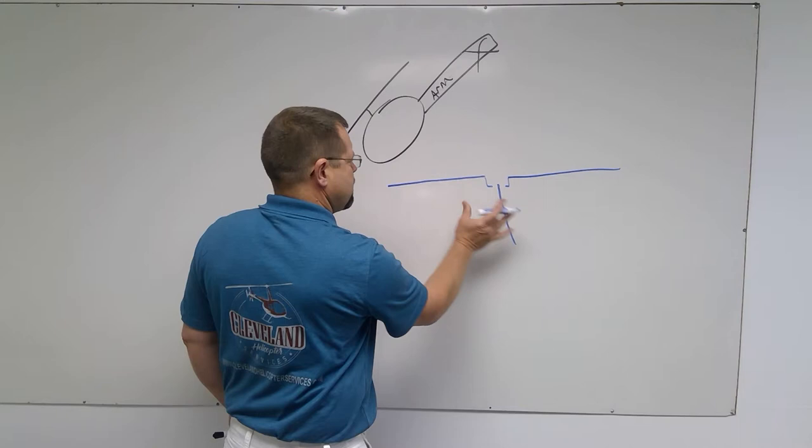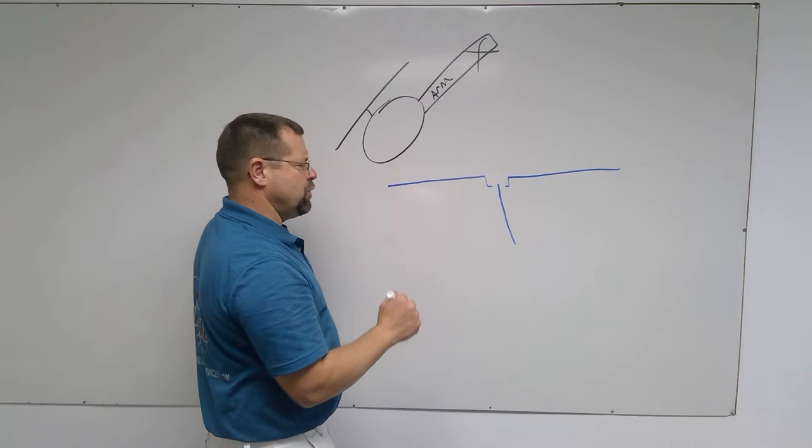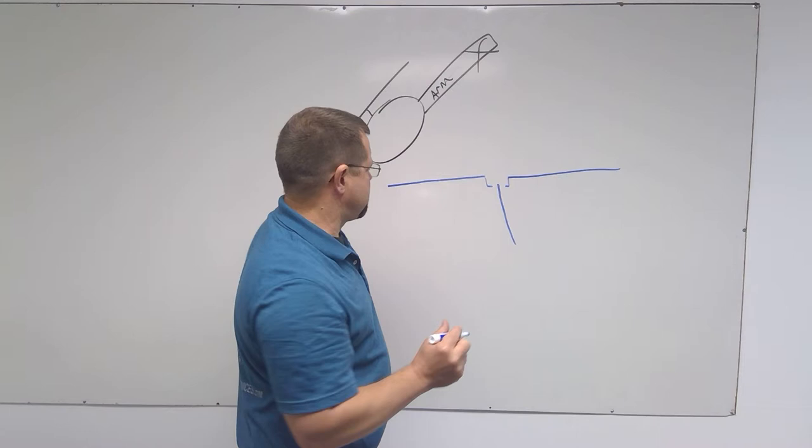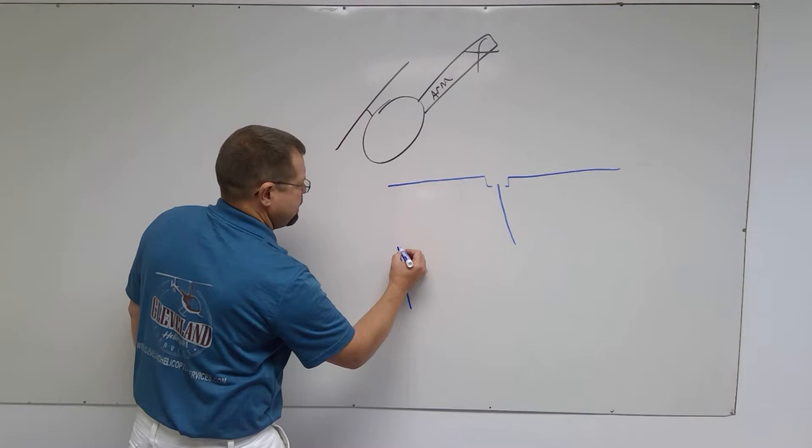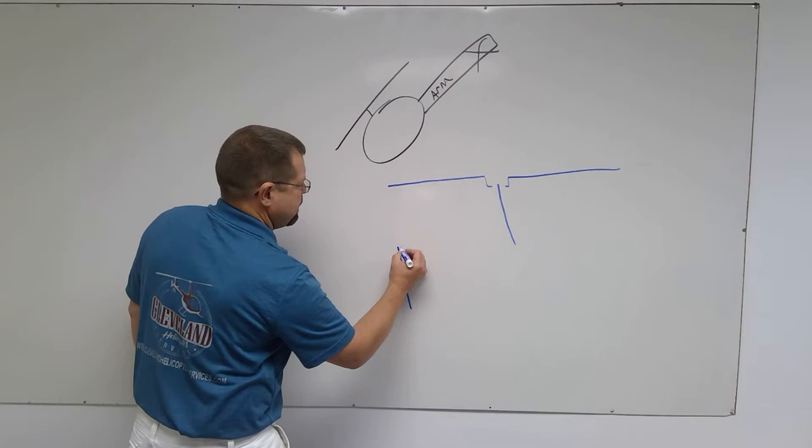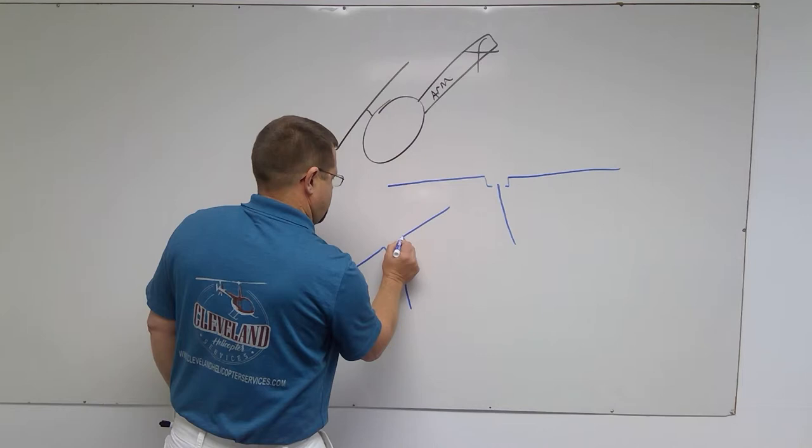In other words, if the helicopter is not hanging from this rotor system and you put a lateral input in before you load that rotor system, it could look something like this. Right here is the problem.